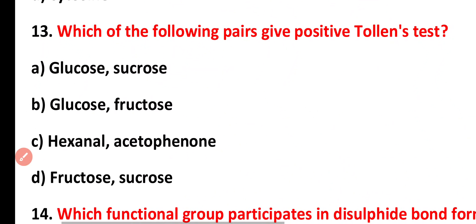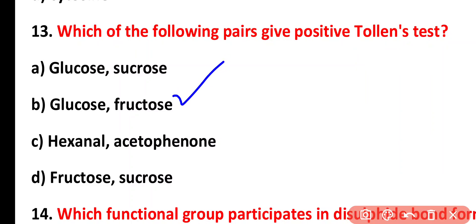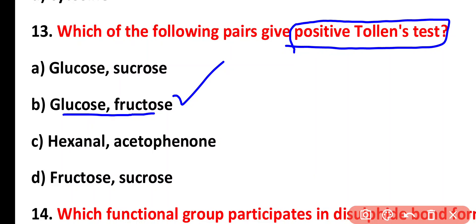Question thirteen: which of the following pairs gave a positive Tollens test? Options: glucose and sucrose, glucose and fructose, hexanol and acetophenone, fructose and sucrose. The correct answer is option B: glucose and fructose. Glucose is an aldehyde and fructose is a ketone, and both give a positive Tollens test.